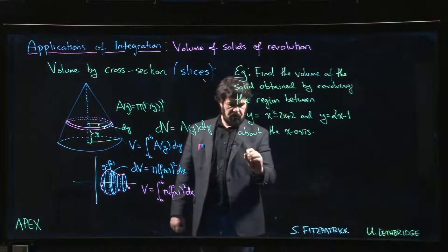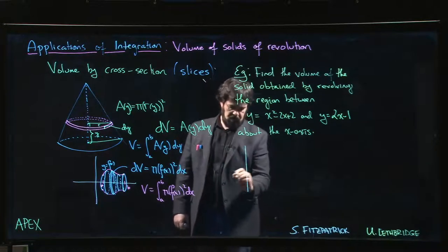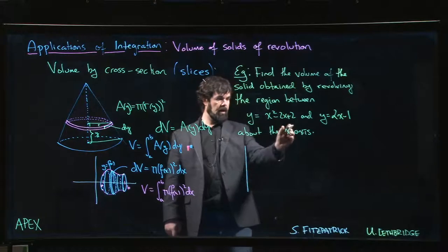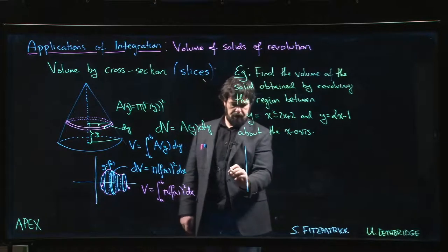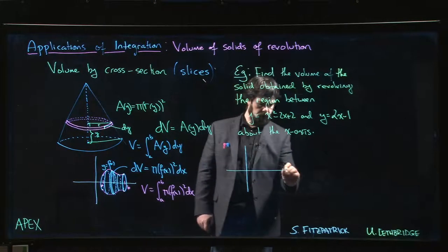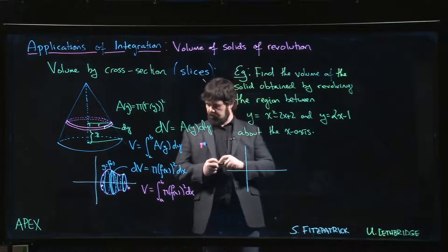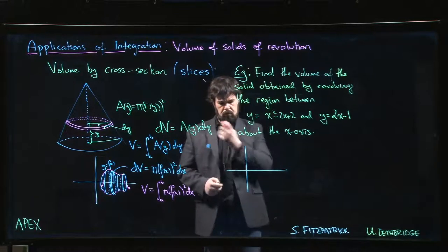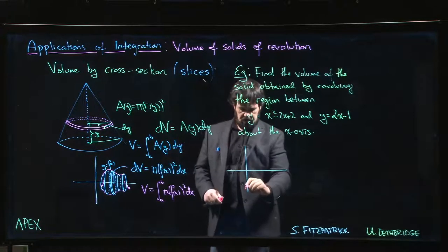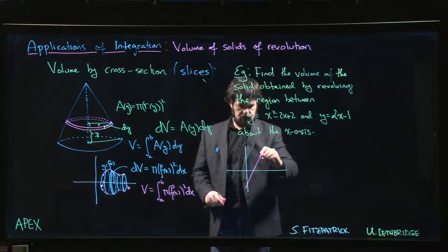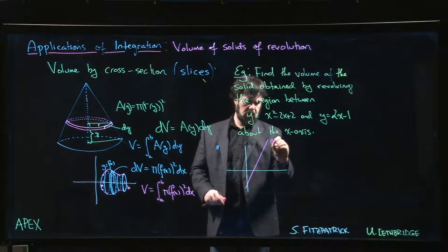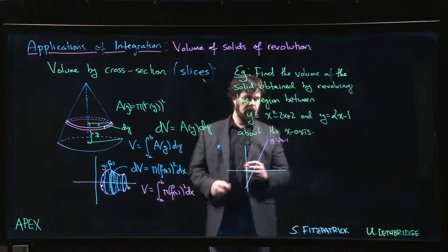So the way this looks here, let's sketch this out. We have two curves. The first y equals 2x minus 1 looks something like this. Here's y equals 2x minus 1.